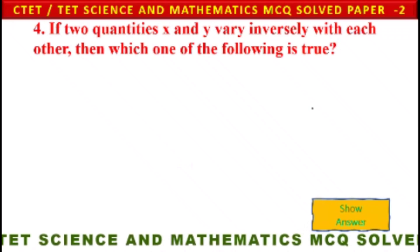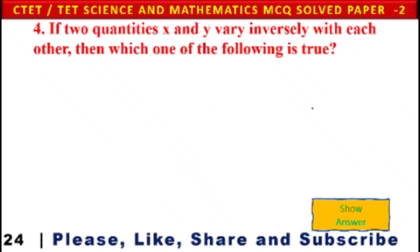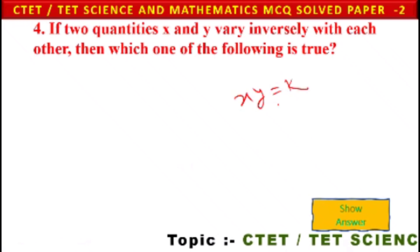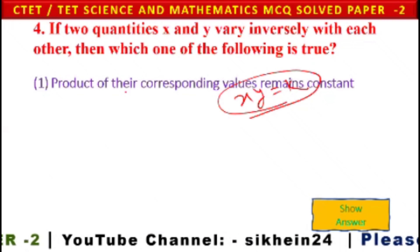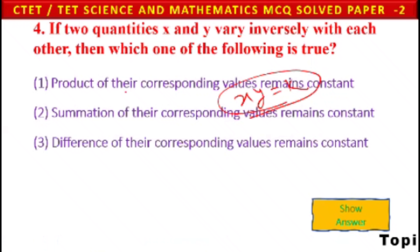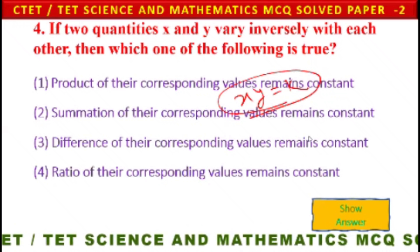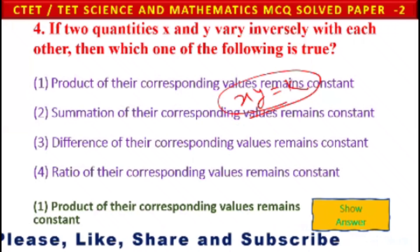Next question: If 2 quantities X and Y vary inversely with each other, which one of the following is true? This is related to direct and inverse proportion. Options: 1) Product of their corresponding values remains constant, 2) Summation of their corresponding values remains constant, 3) Difference of their corresponding values remains constant. Inversely proportional means the product of X and Y is always constant, so option 1 is the correct answer.